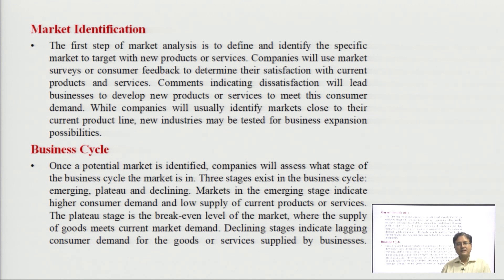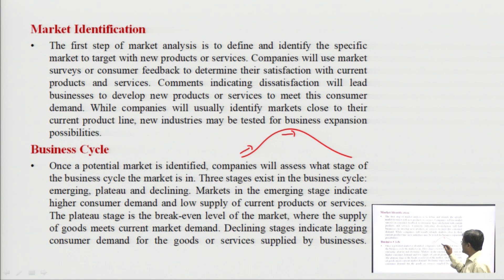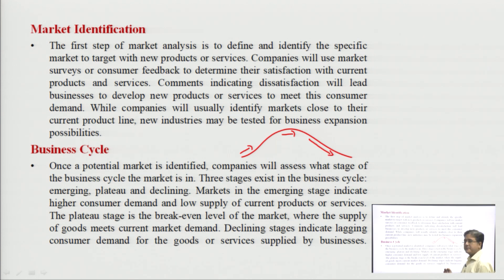The second component is the business cycle, which has three stages: emerging, plateau, and decline. Companies enter the market at the initial point when there is good demand and no competition. When the same type of product saturates the market, they reach a plateau. Later, when people reject or stop buying that product and sales decline, the company moves to the decline stage. They then think of something innovative and re-emerge. This creates a wave-like shape — this is the business cycle, and it is basically based on demand and supply.